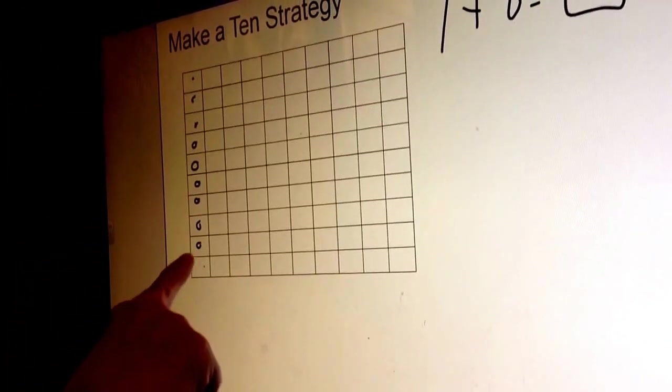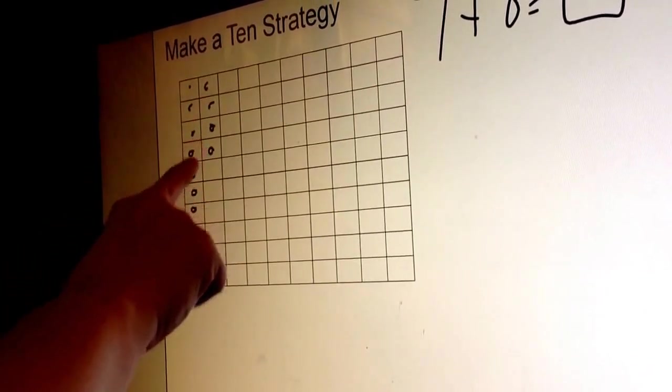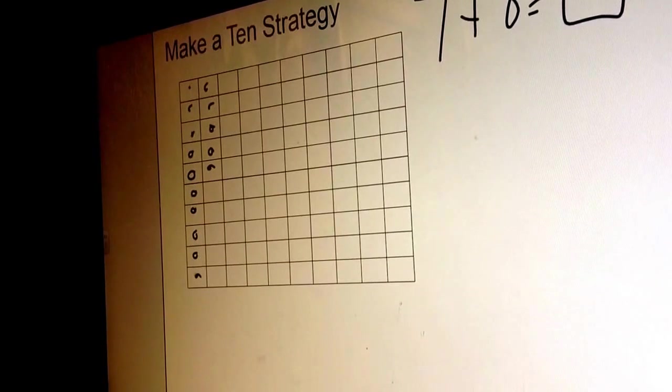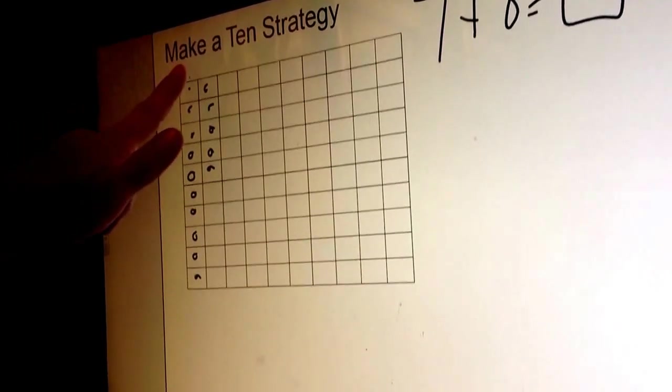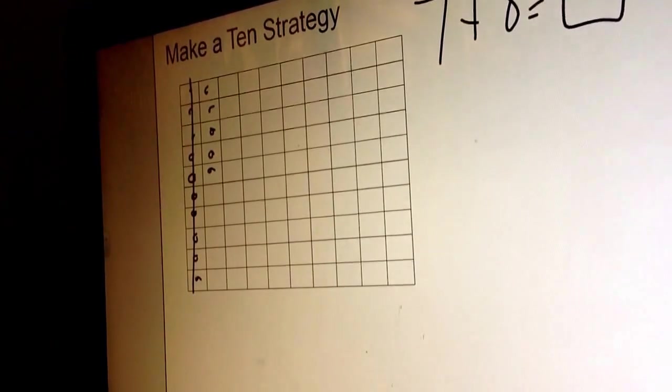We'd have 1, 2, 3, 4, 5, 6, 7, 8. Then we have 1 ten here in the 10 sticks, and then we have 5 extra ones.